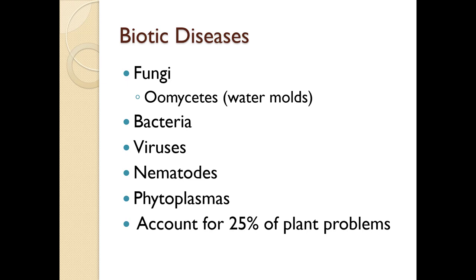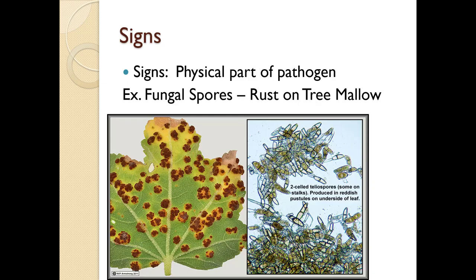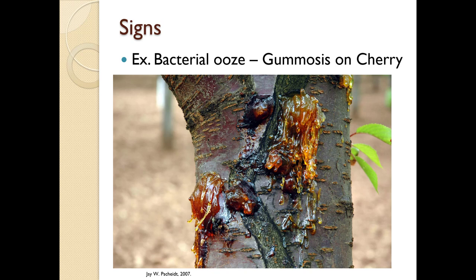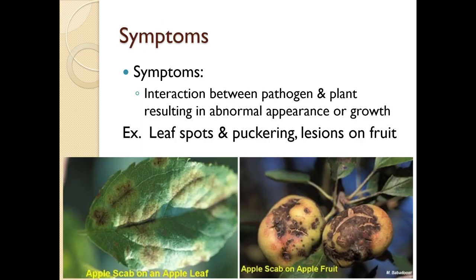Signs are the physical part of a pathogen. Here we have fungal spores on a rust on tree mallow. This is a bacterial disease - gummosis on cherry - that is also a sign. Symptoms are the interaction between the pathogen and the plant, and you would see leaf spots, puckering, or lesions on fruit.